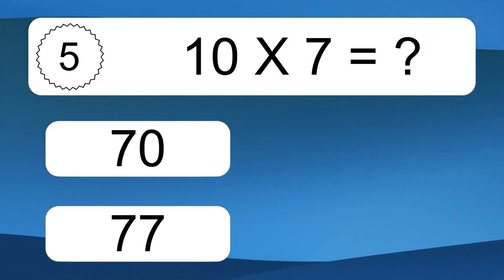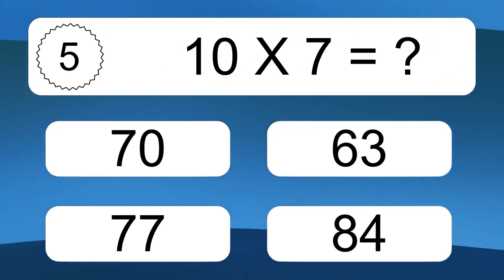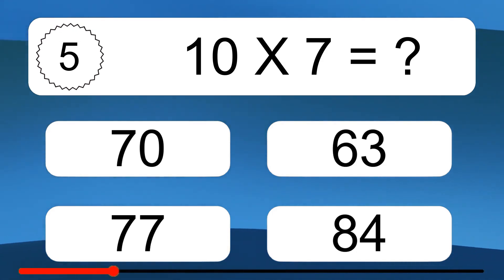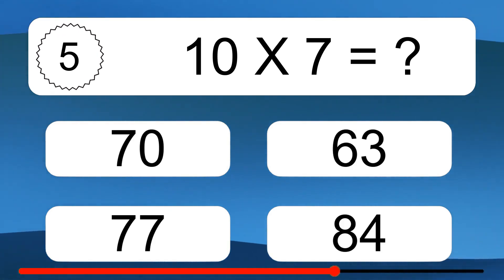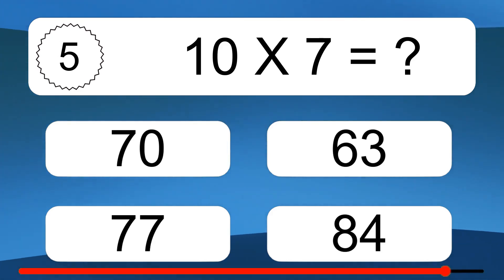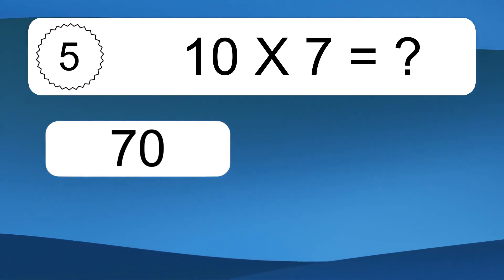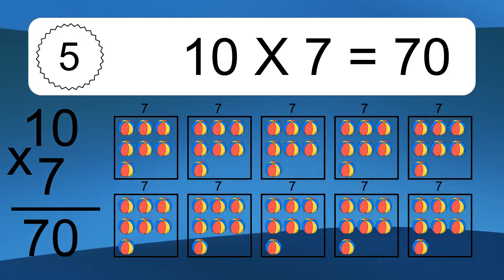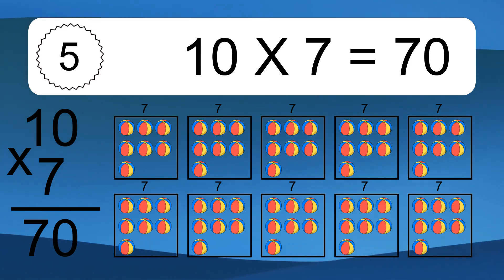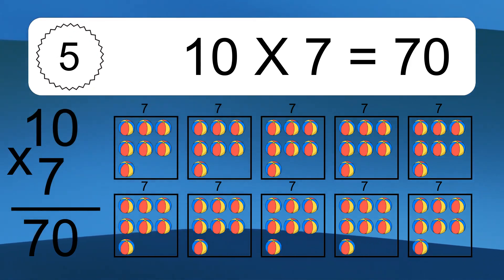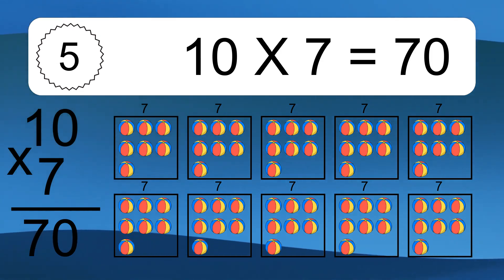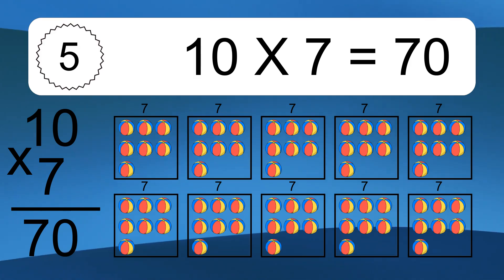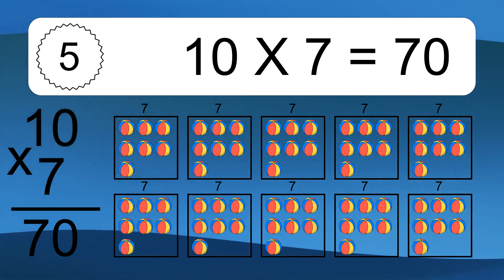Ten times seven equals what? Ten times seven equals seventy. We have ten boxes, and each box has seven colorful balls inside. If you count all the balls in all the boxes together, you will have ten times seven balls. This equals seventy balls.